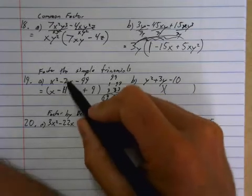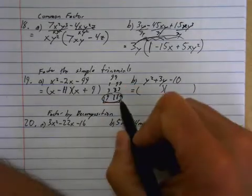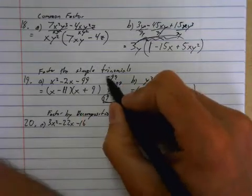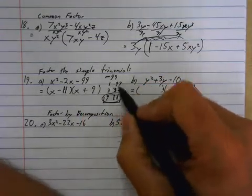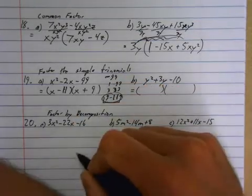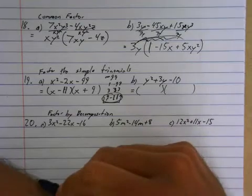And 9 and 11 are the pair that will get me to negative 2, as long as this is negative and that's positive. Oh, also, notice that it was negative 99. So yeah, when this is negative, one of these two has to be negative. So which one's negative? Well, negative 11 plus 9 gives me that. Gives me negative 2.